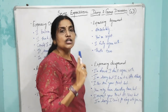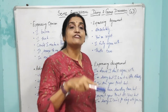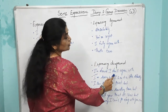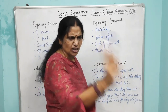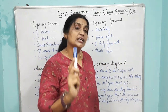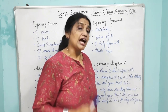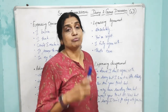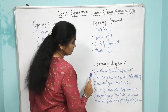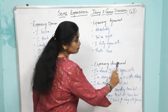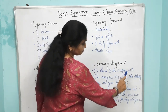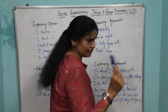Suppose you are disagreeing with someone's opinion — how do you say it? You cannot say 'you are wrong.' You have to be very polite and firm in your opinion. So, to express disagreement, you say: 'I am afraid I don't agree with you,' or 'I am sorry, but I see it a little differently.'